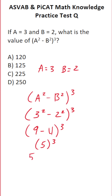That means you're going to take 5 and multiply it by itself 3 times. 5 times 5 is 25. What is 25 times 5? You should be able to do that mentally. 25 times 4 would be 100 — just tack on 25 — that's going to be 125.